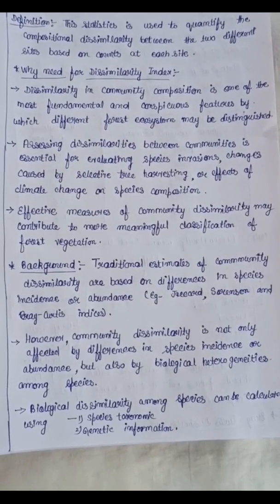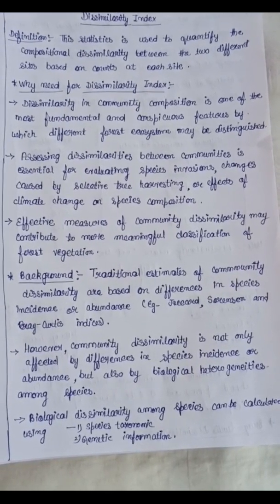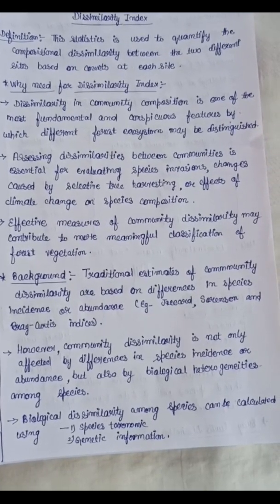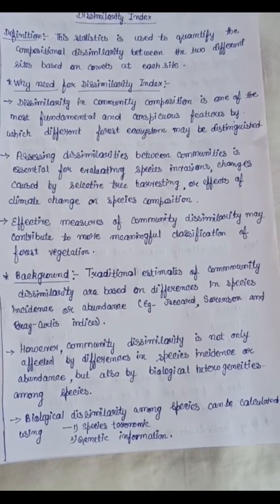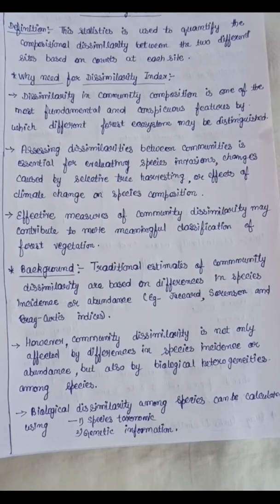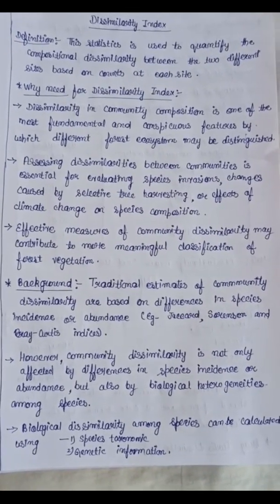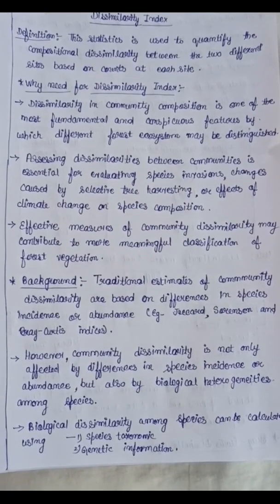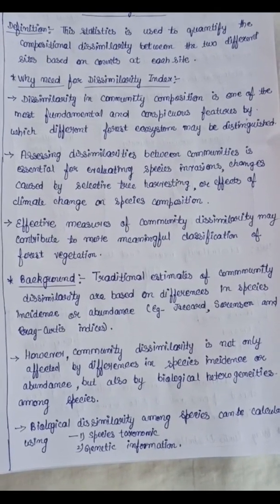Background: Traditional estimates of community dissimilarity are based on differences in species incidence or abundance, as we studied earlier in similarity indices like Jacquard, Sorenson, and Bray-Curtis. However, community dissimilarity is not only affected by differences in species incidence or abundance, but also by biological heterogeneities among species.